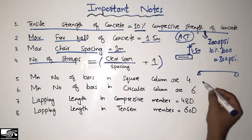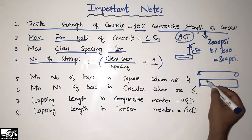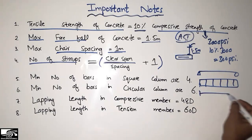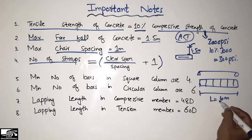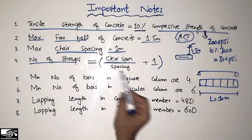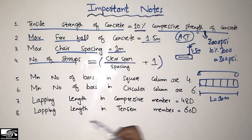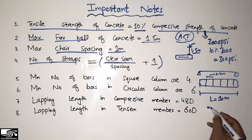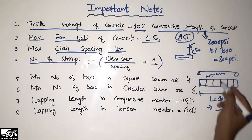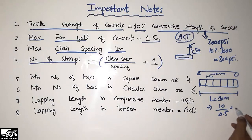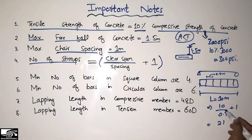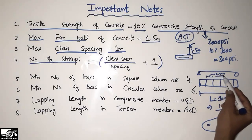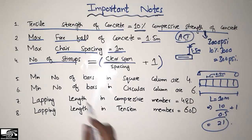For example, consider a simply supported beam. Looking at the elevated section of the beam, let's suppose the clear span is 10 meters and the spacing between stirrups is 0.5 meters. Using the formula: 10 divided by 0.5, plus 1, equals 21. So 21 stirrups are used in this beam with a spacing of 0.5 meters. You can use this formula to find the number of stirrups in beams or columns.